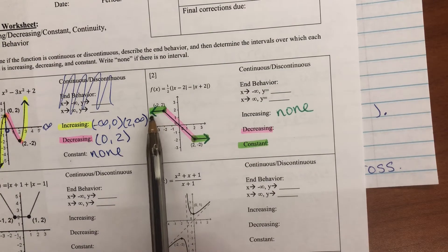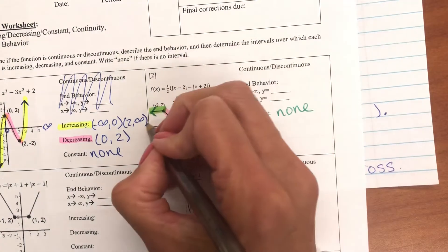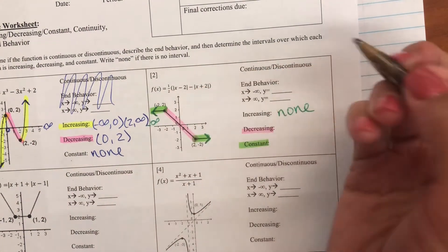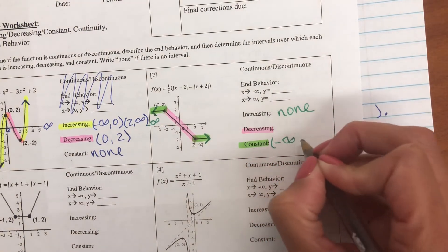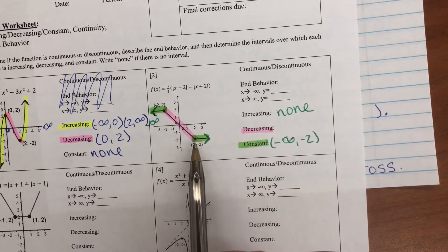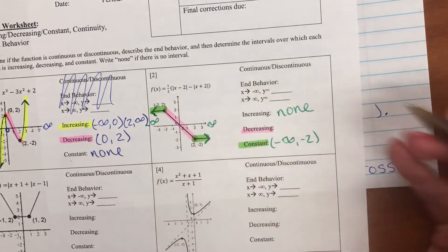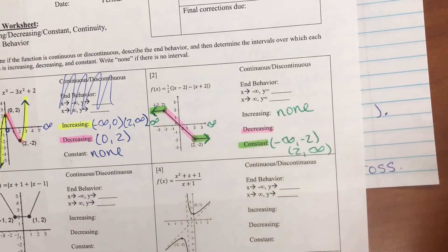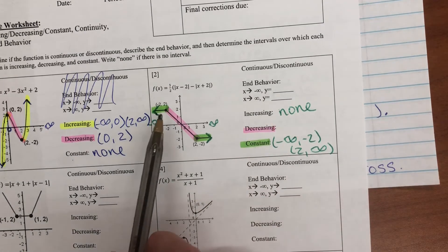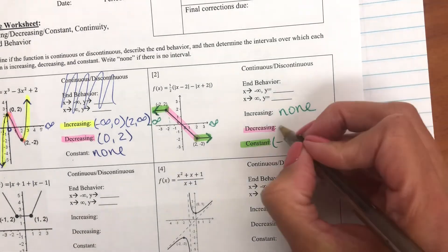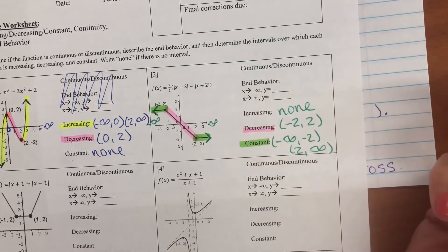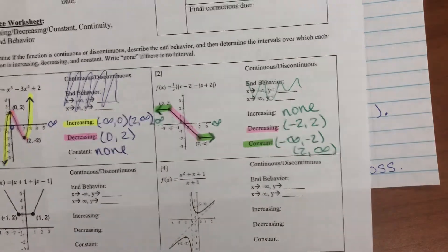Constant. Constant would be negative infinity to negative two. And then here would be two to positive infinity. And then decreasing would be negative two to positive two. Remember, you're only looking at the x values to find these numbers.